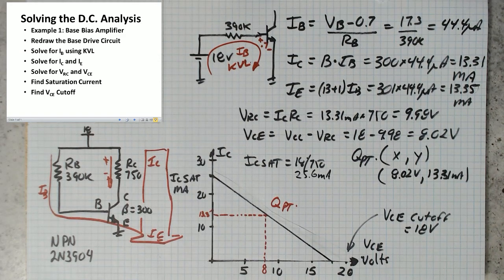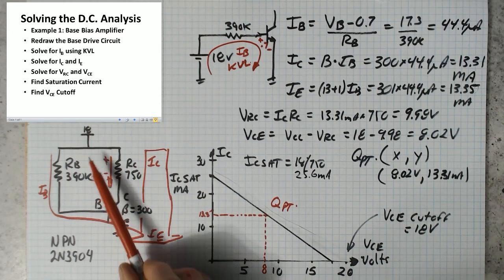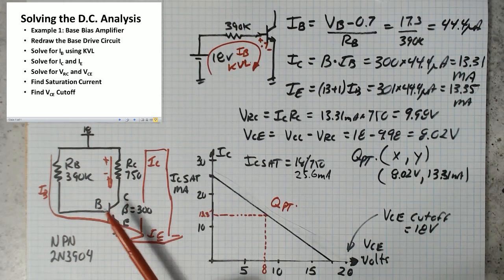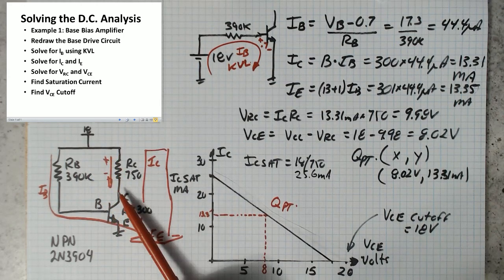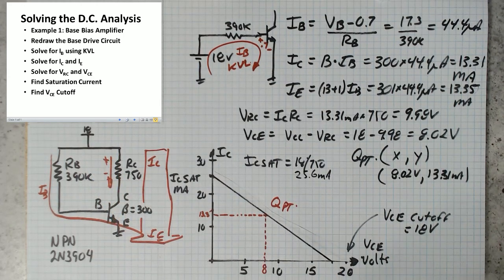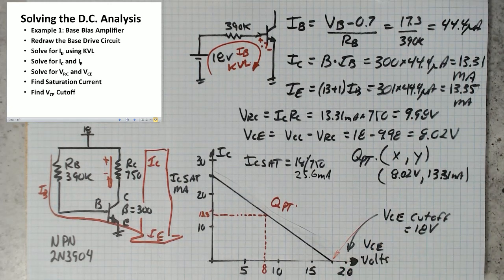Once you find the saturation current, you find VCE cutoff, and that's when you look at the transistor as being an open, and ask how much voltage would there be across it. So if this was open, no current would flow here. You'd have 18 there, you'd have 18 there. So the cutoff voltage, VCE cutoff, which is right there, is 18 volts.